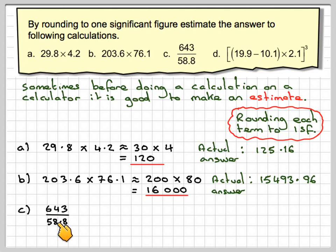Part C, 643 divided by 58.8. Well 643, that 4 will keep that 6 the same, so that will become 600 to one significant figure. 58.8 will become 60 to one significant figure. 600 divided by 60 is equal to 10. And that's compared with the actual answer of 10.9353.